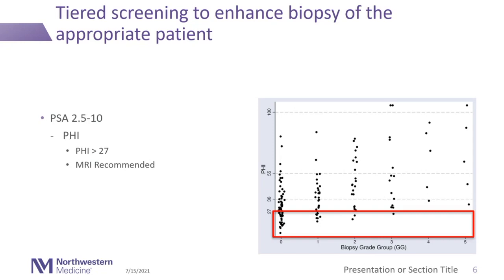With PSAs between 2.5 and 10, if PHI is less than 27, we recommend MRI. Dr. Catalona confirmed this approach. If PHI is over 27 — above this red box — we typically move to MRI.